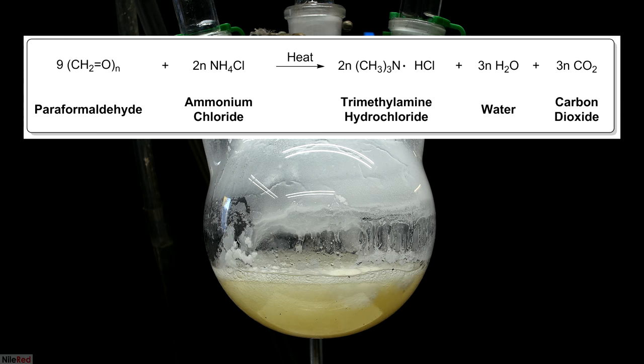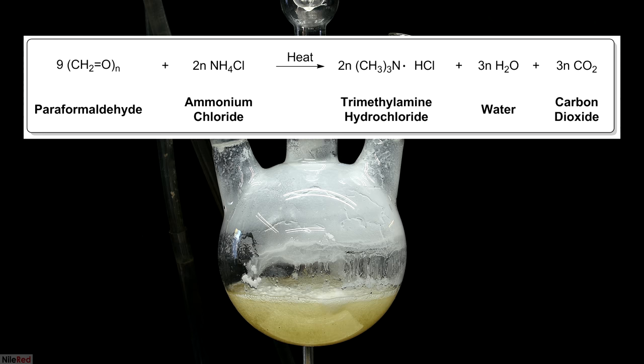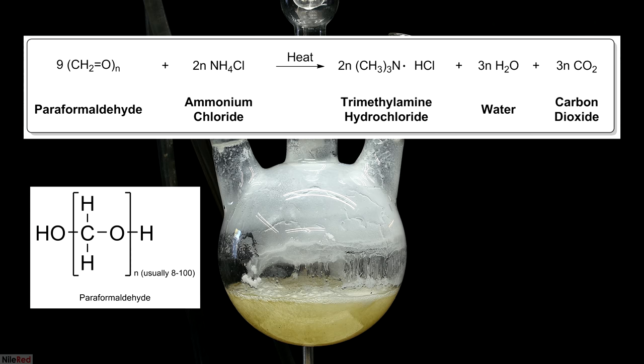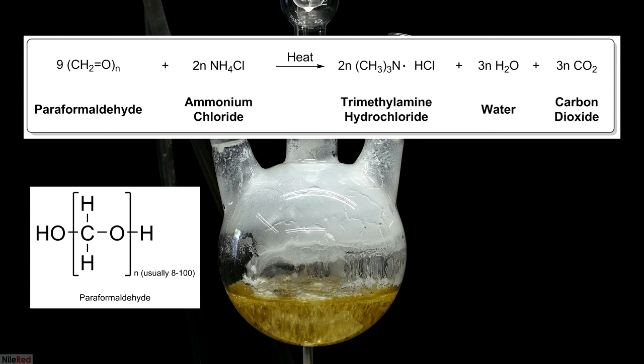This is the overall reaction that's occurring. Paraformaldehyde and ammonium chloride are reacting together to form trimethylamine hydrochloride, water, and CO2 gas. The balancing of this equation is kind of interesting because paraformaldehyde is a polymer. It's made up of repeating CH2O subunits but each polymer unit has a variable length. The length normally ranges between 8 and 100 repeats so we represent the amount of subunits by the variable n.